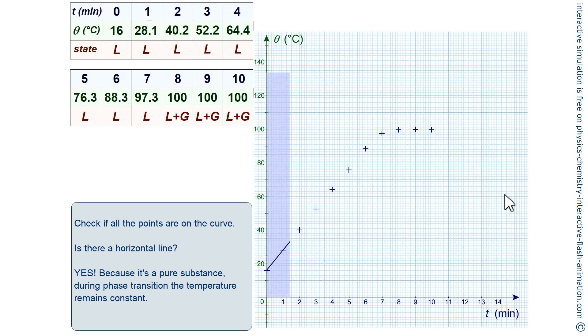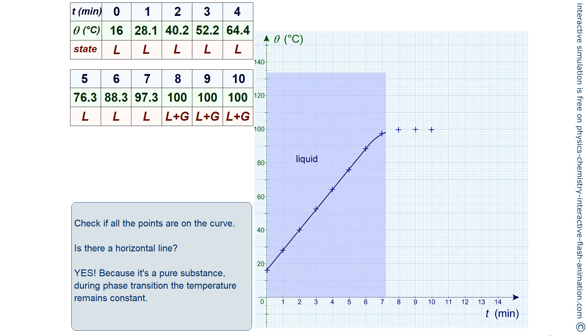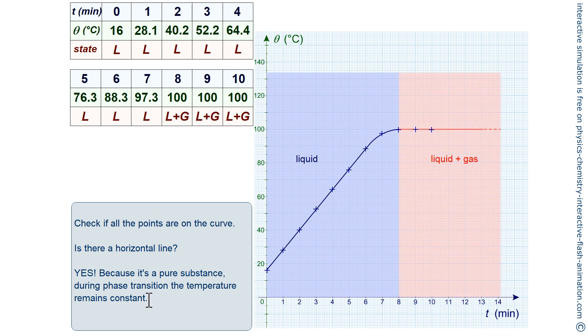The temperature no longer evolves as soon as the change of state has started. So when there is both the liquid phase and the gas phase of water, the temperature remains stable. It is constant and equal to 100 degrees Celsius.